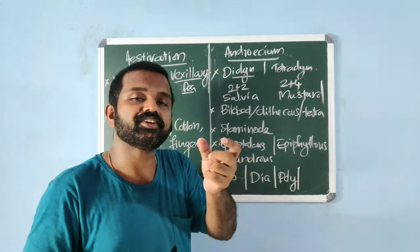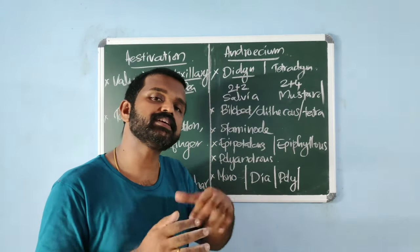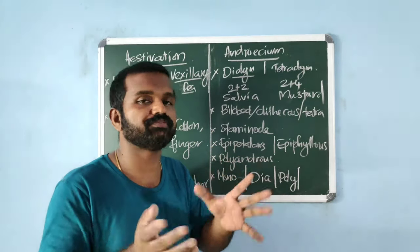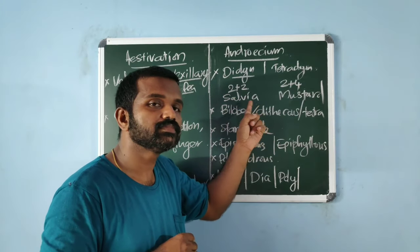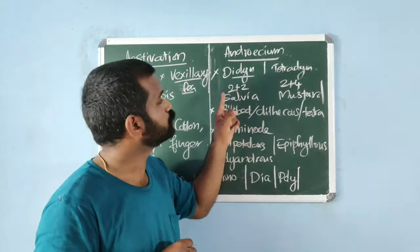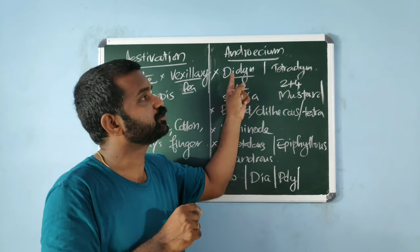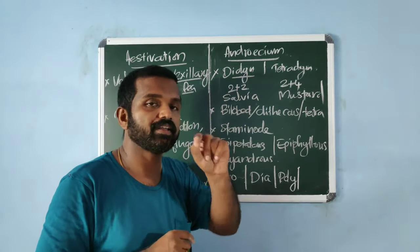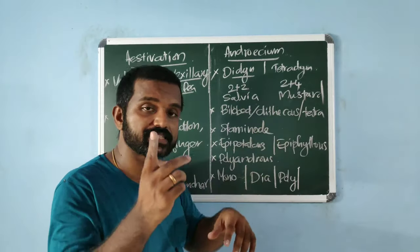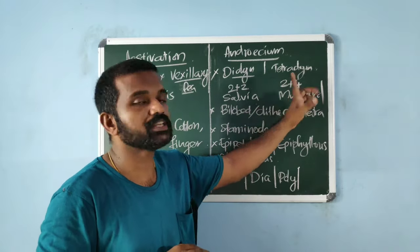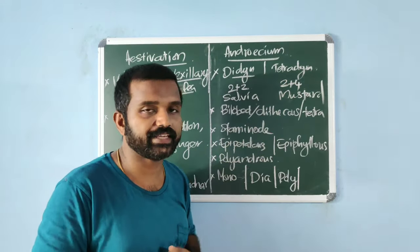Variation in the length of stamens can be seen in flowers of different families. In Salvia, four stamens are present — represented as 2+2, known as didynamous condition. In mustard (Brassicaceae), the arrangement is 2+4, known as tetradynamous stamens.